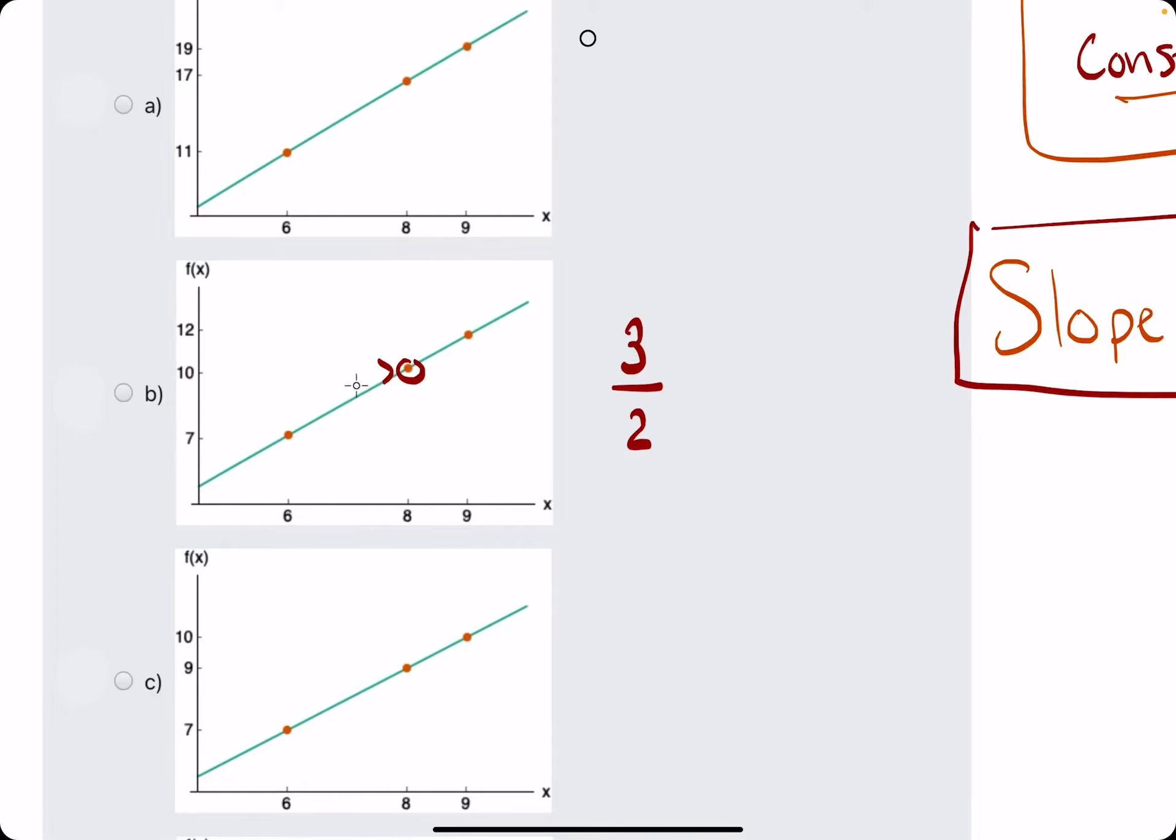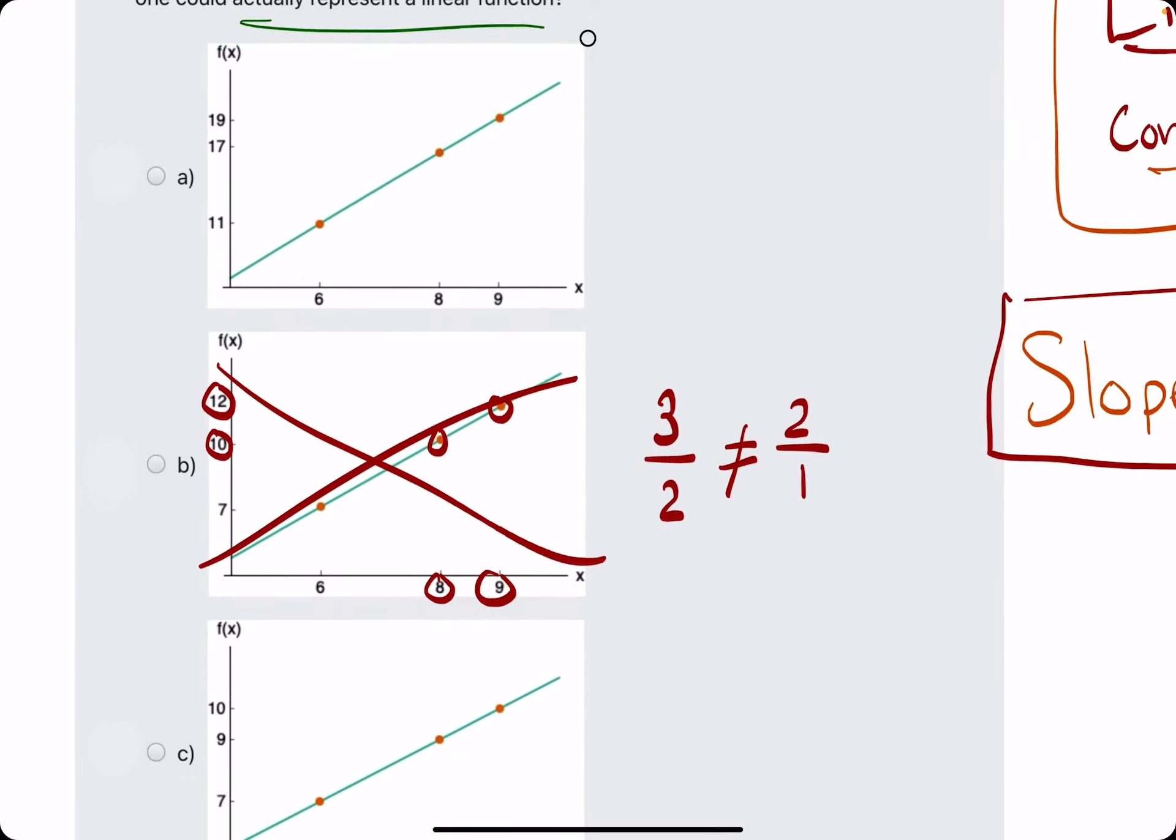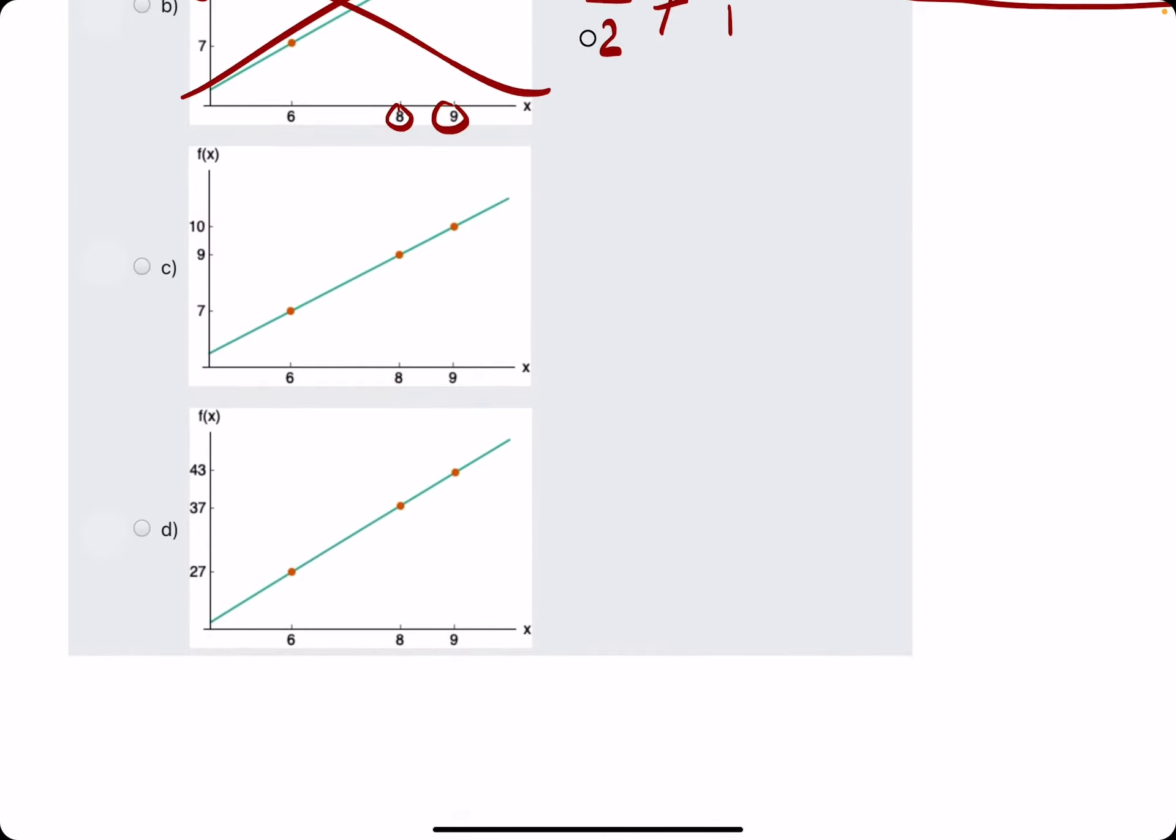And if we repeat the process with the second and third point, the rise is from 10 to 12. So 2 over a run from 8 to 9, which is 1. So 3 over 2 and 2 over 1 are not equal. This can't be an answer. I'll go ahead and cross off A like before. And we move on to C.